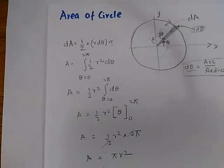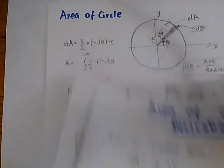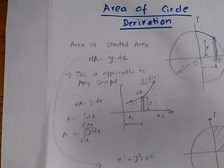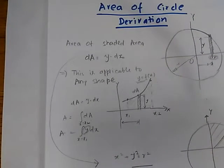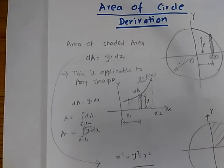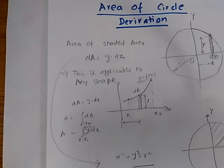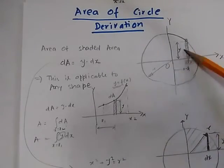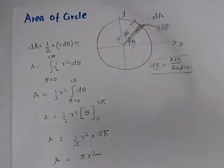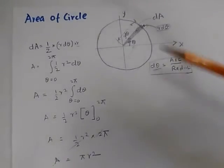In all these problems, the key thing to keep in mind is: to find an area, find the area of a very small portion and then integrate it — whether you use rectangular coordinates with dA = y·dx, or a polar-style approach with dA = ½r²dθ.